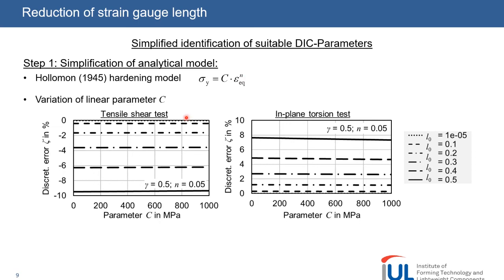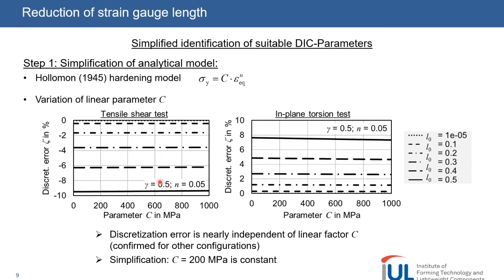Shear strain and N value are constant, while only C changes. It can be seen that C, which represents the strength, has nearly no influence on the discretization error. The error is near constant for each configuration. For this reason, we simplified the model again and assumed that C can be held constant at a value of 200 MPa.